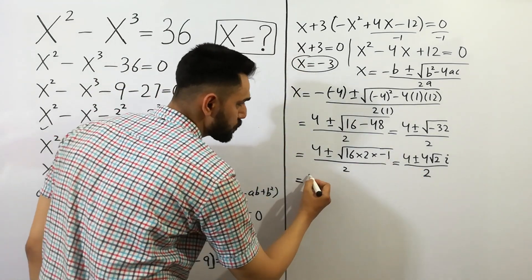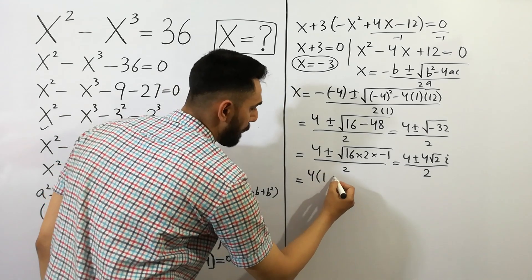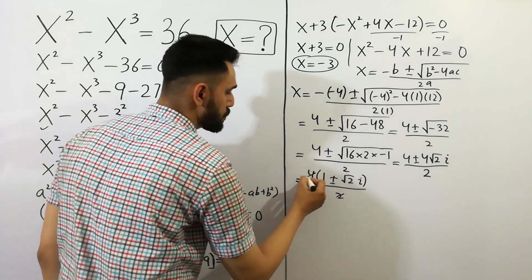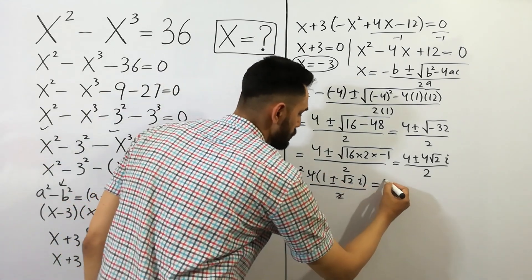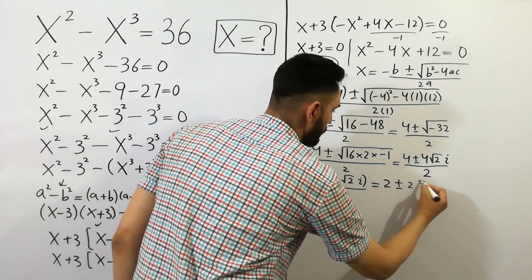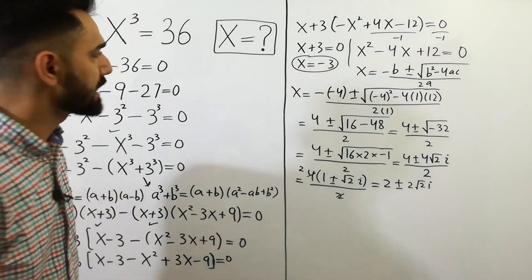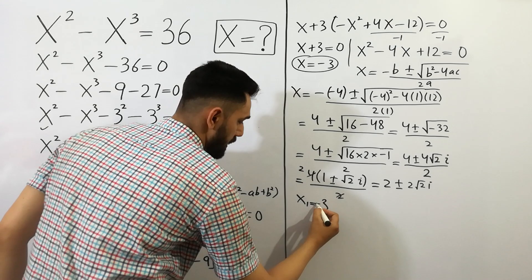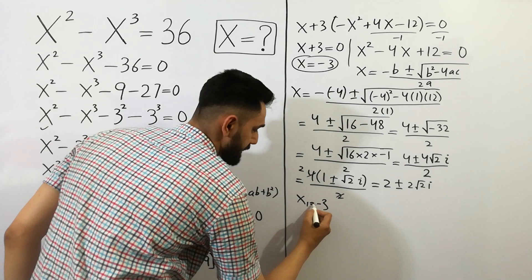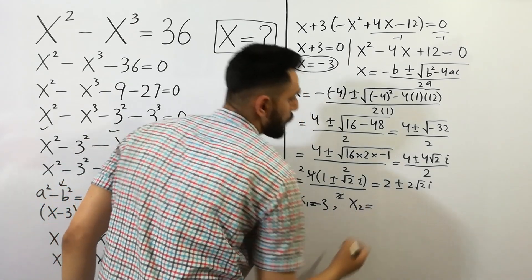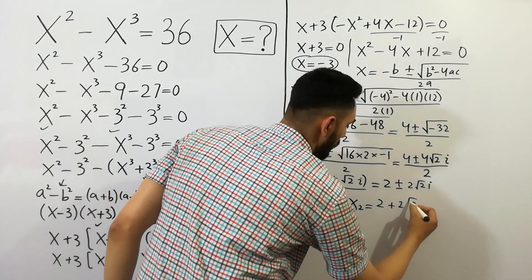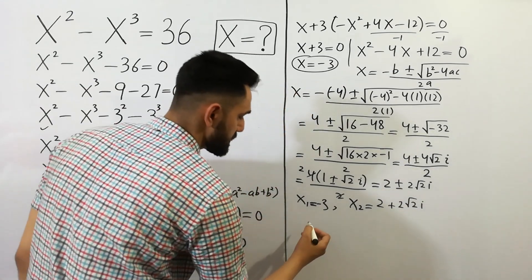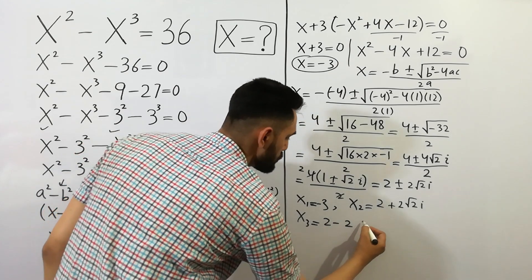Simplifying, 4 divided by 2 is 2, so we get 2 plus or minus 2 root 2 iota. So the three solutions are: x1 is equal to minus 3, x2 is equal to 2 plus 2 root 2 iota, and x3 is equal to 2 minus 2 root 2 iota.